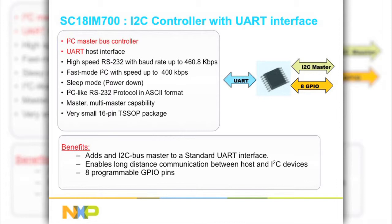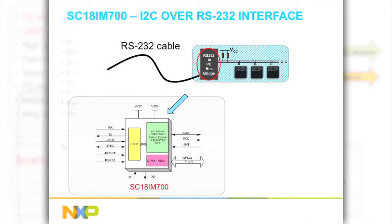The I2C controller supports I2C speeds of up to 400 kHz. If your application must be designed to control I2C devices at a rather long distance, then this device may be suitable for your design. Or if you want to add I2C capability through a simple host interface, then this device might be the solution.